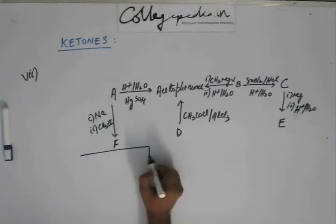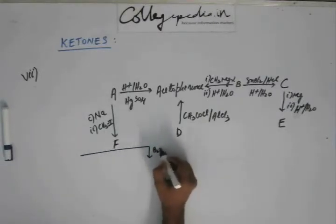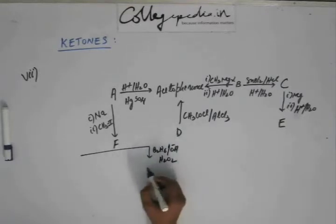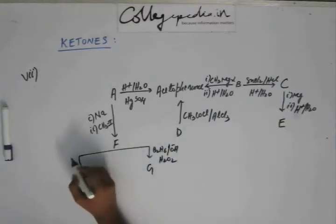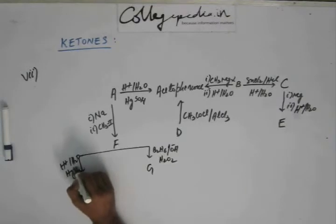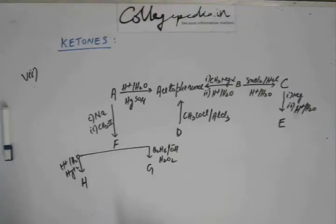From F if I add diborane in basic medium and hydrogen peroxide, I get G. And if I add simple H+, H2O, and Hg2+ ion, I will get H. Then identify A, B, C, D, E, F, G, and H.